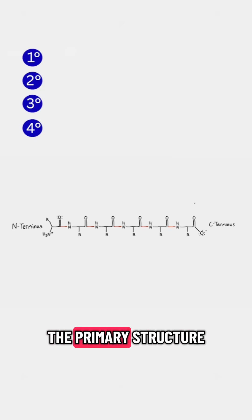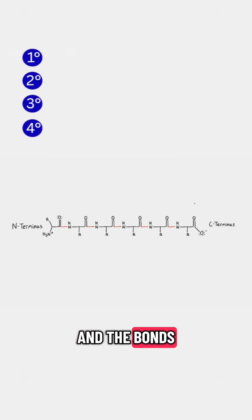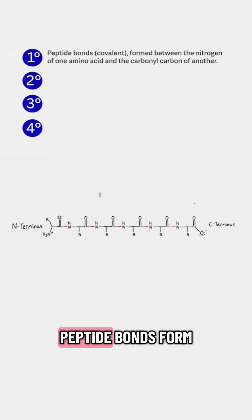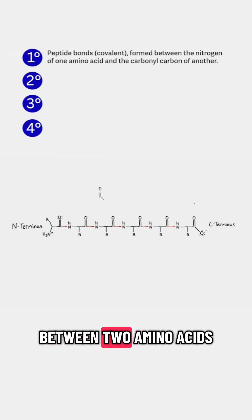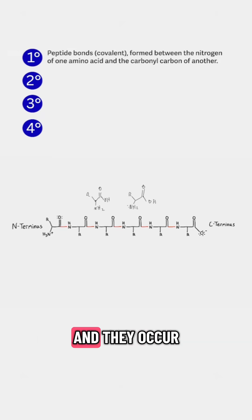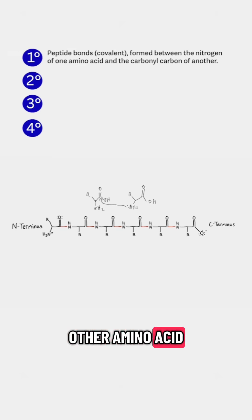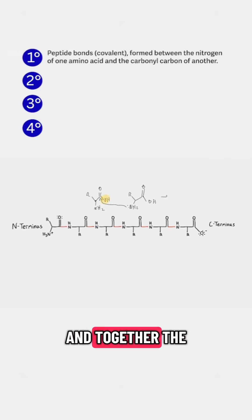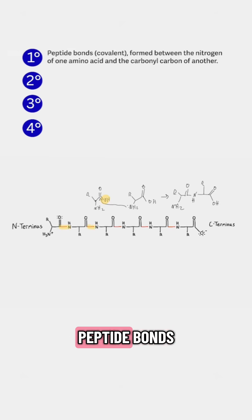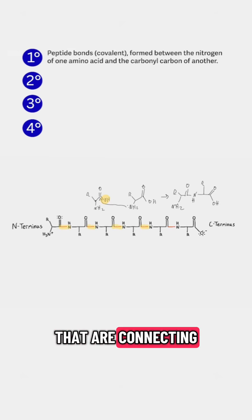First, we have the primary structure, and the bonds present in this are peptide bonds. Peptide bonds form between two amino acids, and they occur when the lone pair on the nitrogen of one amino acid attacks the carbonyl carbon on the other amino acid. When it happens, it kicks off this OH, and together the two amino acids look like this. All of these red bonds are peptide bonds that are connecting amino acids together.